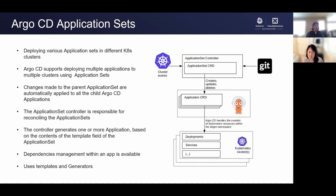The next project we are going to look at is Argo CD ApplicationSet. Argo CD is a declarative GitOps continuous delivery tool for Kubernetes. It is implemented as a Kubernetes controller which continuously monitors running microservices and compares the current live state against the desired state in a Git repo. If a deployed application deviates from the target state, it is considered out of sync, and Argo CD monitors these differences and tries to sync the live state automatically so that what is running on the cluster matches what is in the Git location. Argo CD also has multi-tenancy and single sign-on support built in.